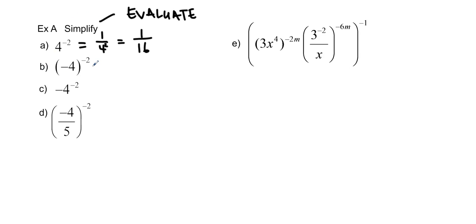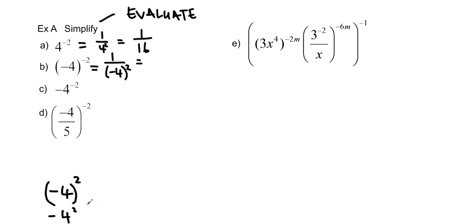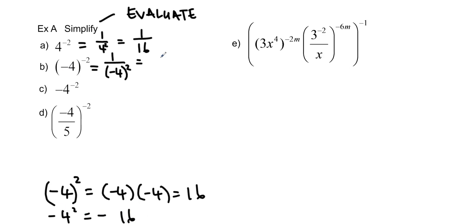This is a reminder that when doing these questions you need to keep the brackets. For negative 4 to the negative 2 with brackets: it's 1 over negative 4 squared. Negative 4 squared — with brackets — is negative 4 times negative 4, which gives 16, so the answer is 1 over 16. But negative 4 squared without brackets keeps the negative on the outside: you do 4 squared which is 16, giving negative 1 over 16.